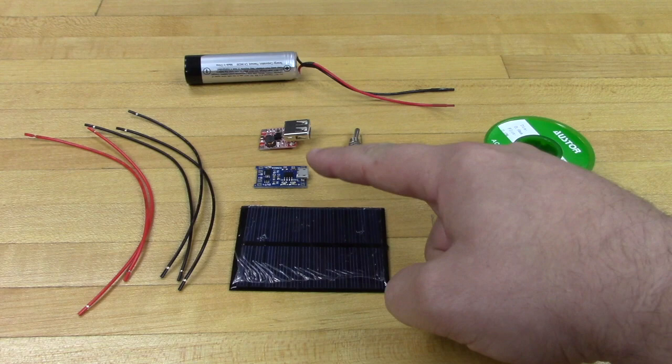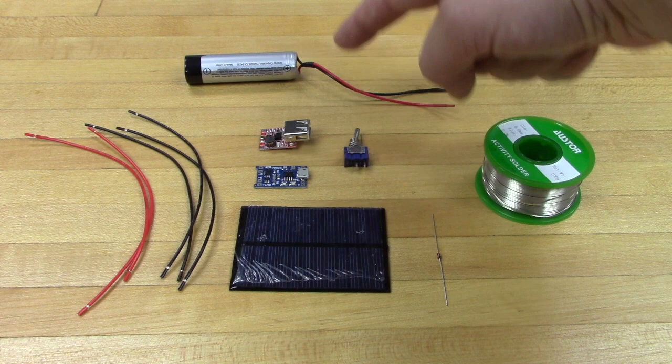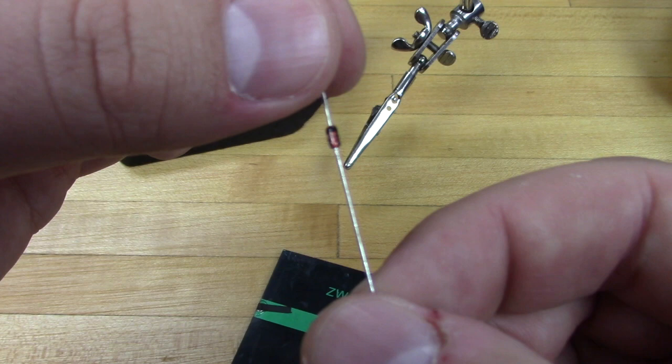a small solar panel, a blocking diode, a switch, a lithium charge controlling board, a USB boosting circuit board, a 3.7 volt lithium battery, and some solder.